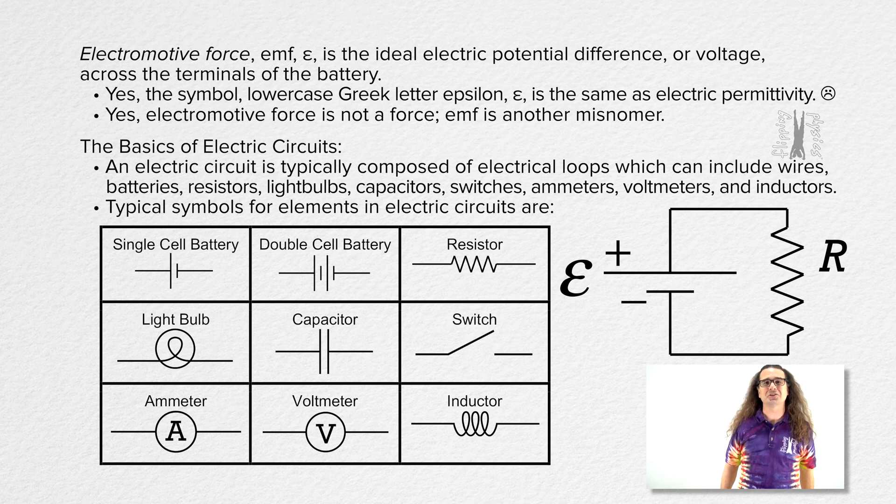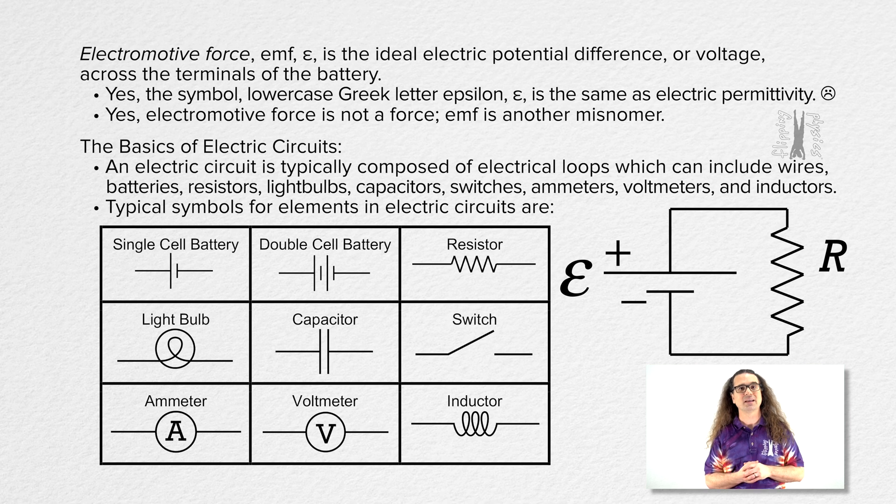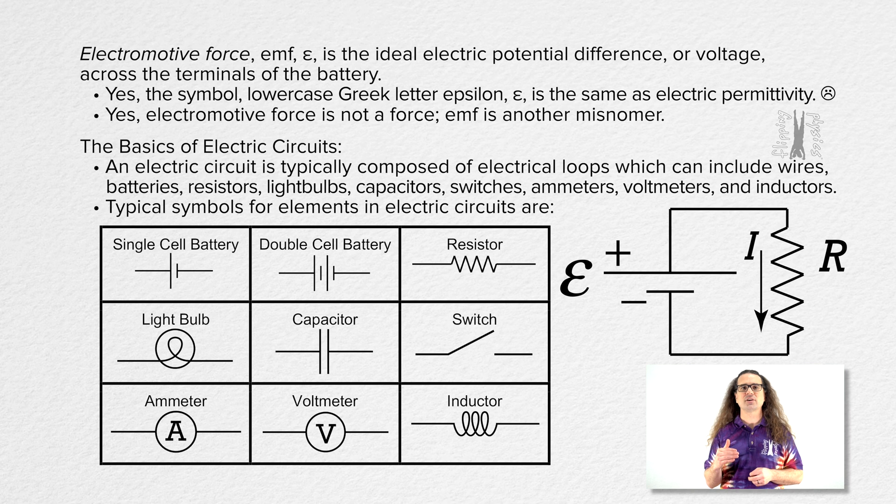According to the law of charges, positive charges are repelled from the positive terminal of the battery and attracted to the negative terminal. Therefore, the electric current in the circuit is clockwise. I've illustrated that with an arrow indicating that the electric current goes down through the resistor in our circuit.